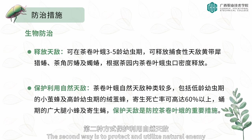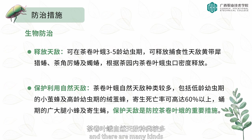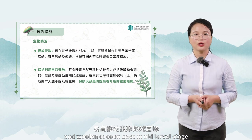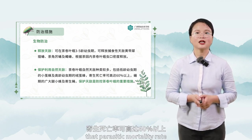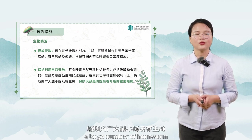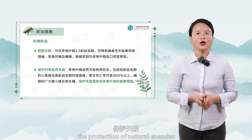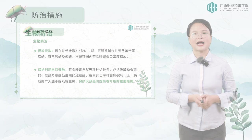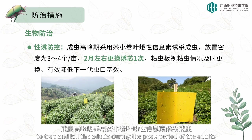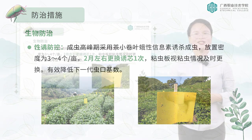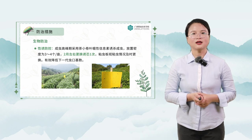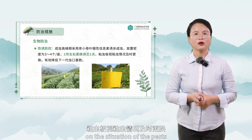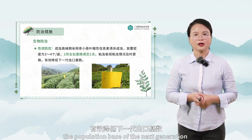The second way is to protect and utilize natural enemies. There are many kinds of natural enemies of Adoxiphes orana, including small cocoon bees in the young larval stage and woolen cocoon bees in the old larval stage, with parasitic mortality rates as high as more than 60 percent, and large numbers of hornworm and parasitic flies in the pupal stage. The third way uses sex pheromones to trap and kill adults during peak periods, with a density of three to four traps per mu. Change the core approximately every two months, and replace the sticky board in time to effectively reduce the population base of the next generation.